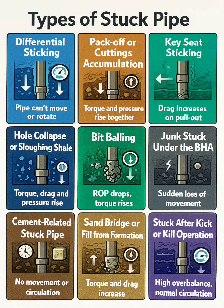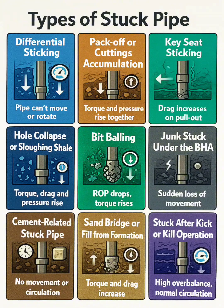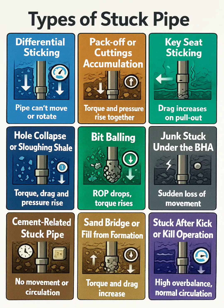Key seat sticking occurs when the pipe becomes wedged in a narrow groove — a key seat worn along a dogleg. Indicators include gradual drag increase on trip out, normal circulation, sticking at the same depth on each trip, and rotation possible but no upward movement.